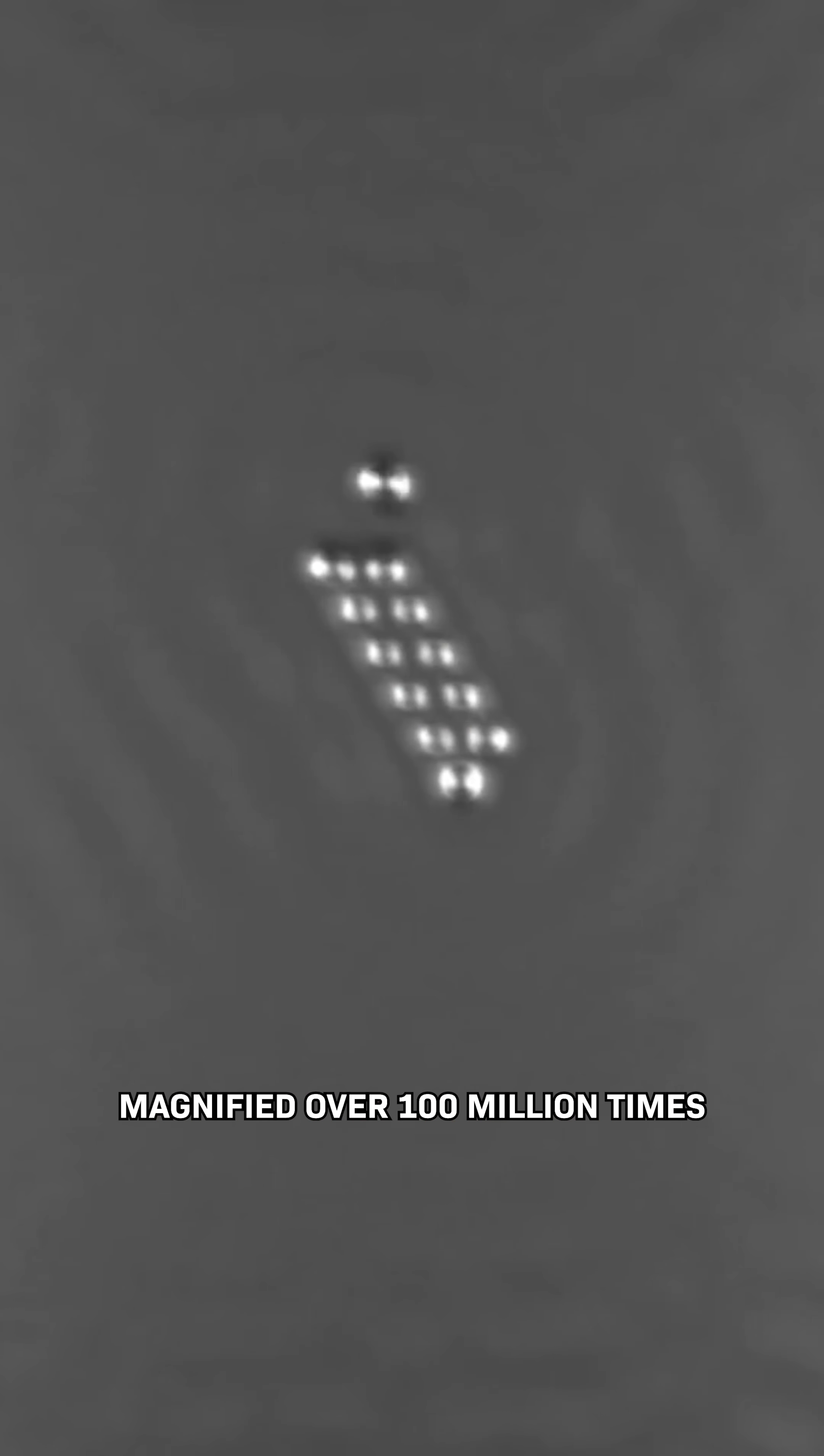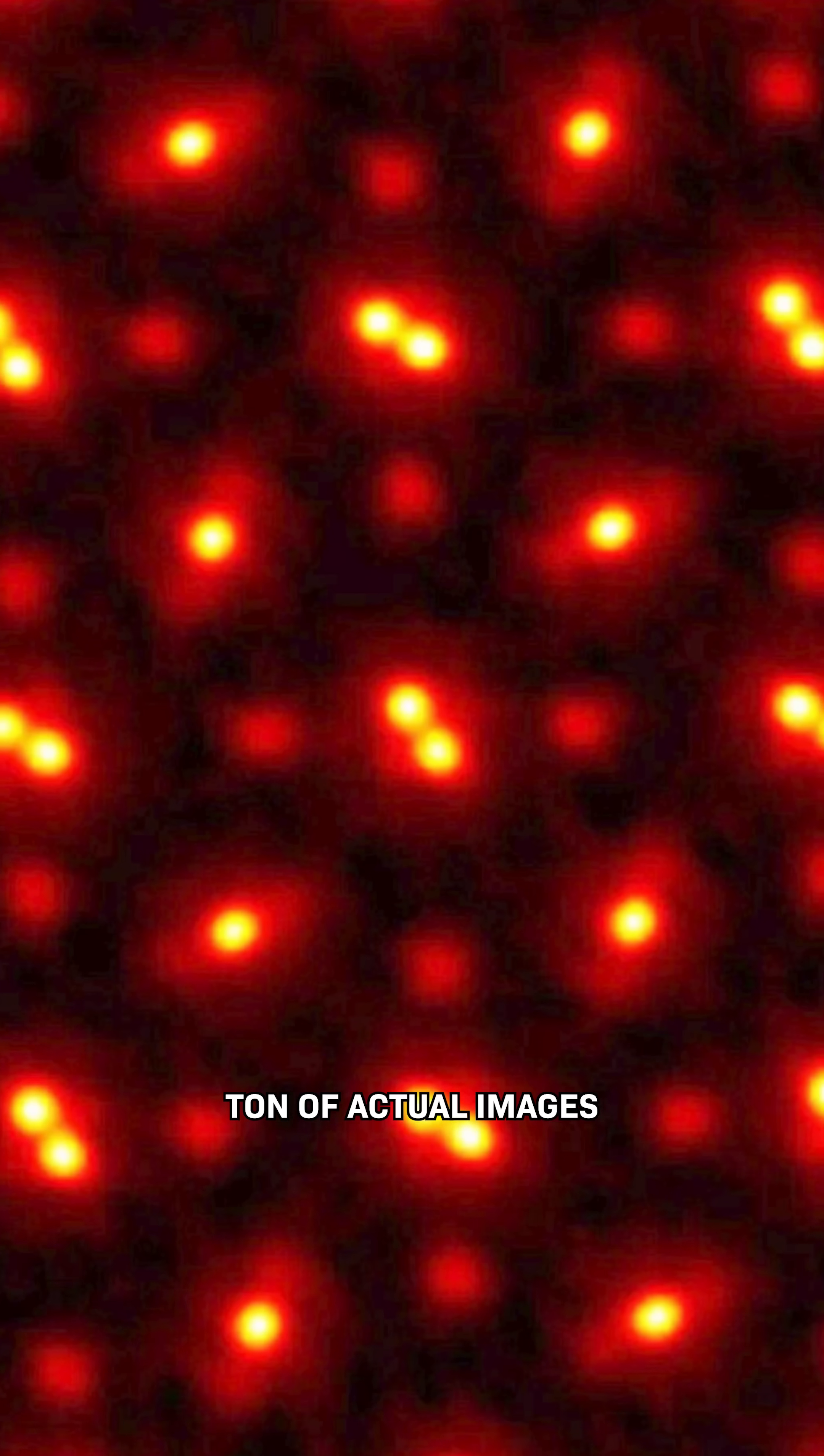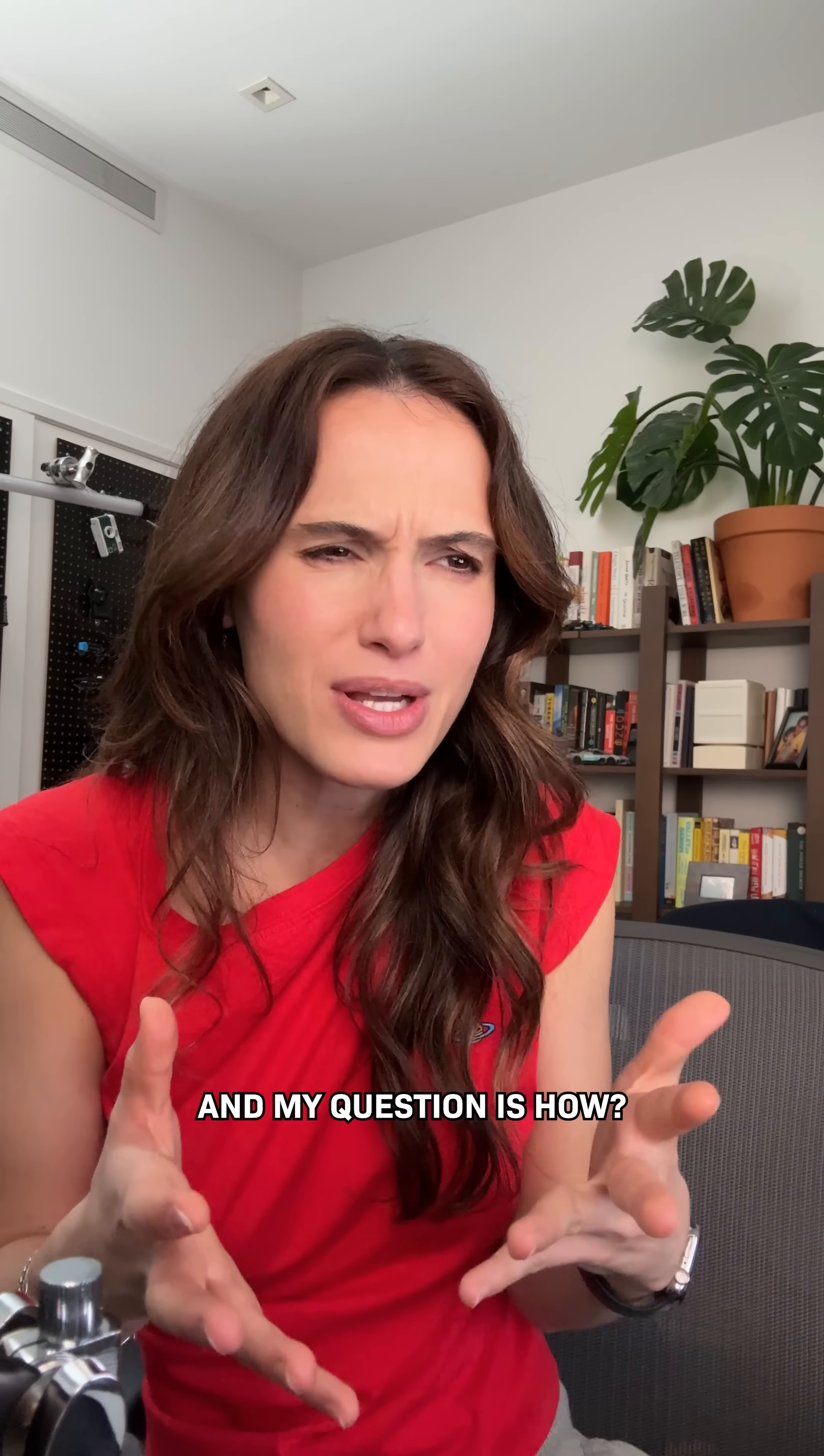This is an atom, magnified over a hundred million times and made into a tiny movie. It's a famous example of a ton of actual images that we've taken of atoms. And my question is, how?